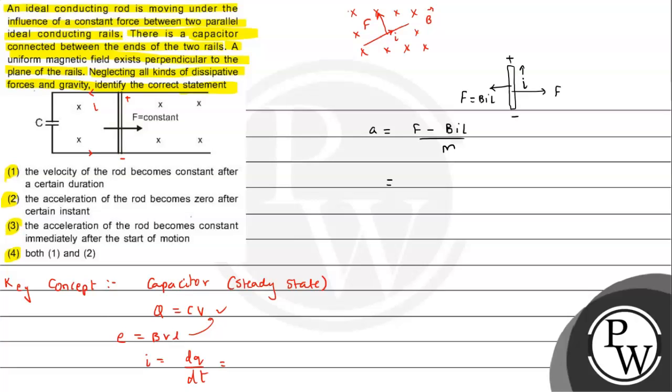From here we can see that the value of F minus BIL we can calculate from the expression. Current i is dq by dt.